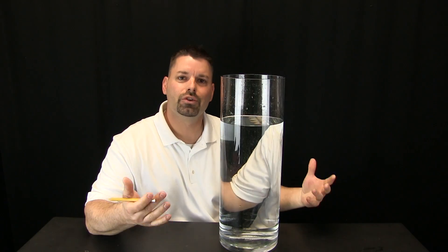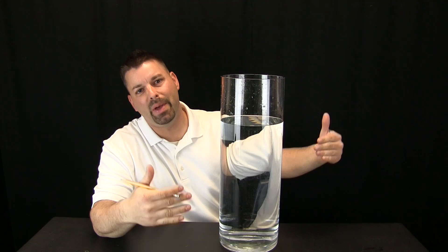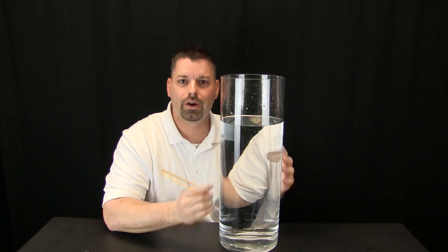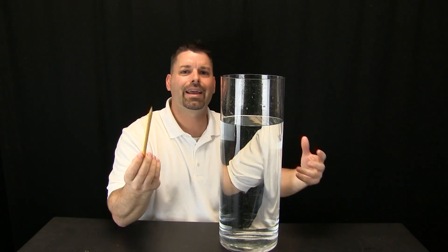That is why this pencil seems to be broken. To take a closer look at the idea that light slows down and bends when it goes through water, we have got ourselves a bigger container of water and we are going to let this pencil act like light.